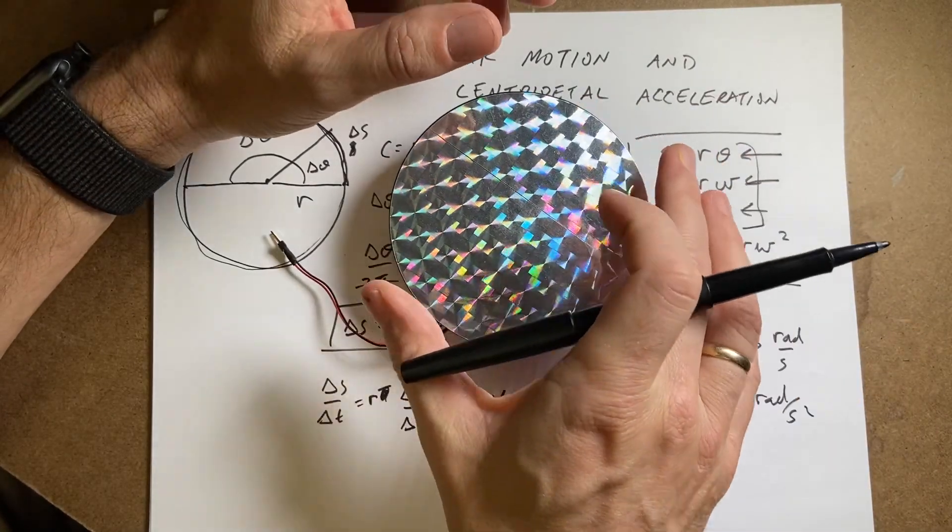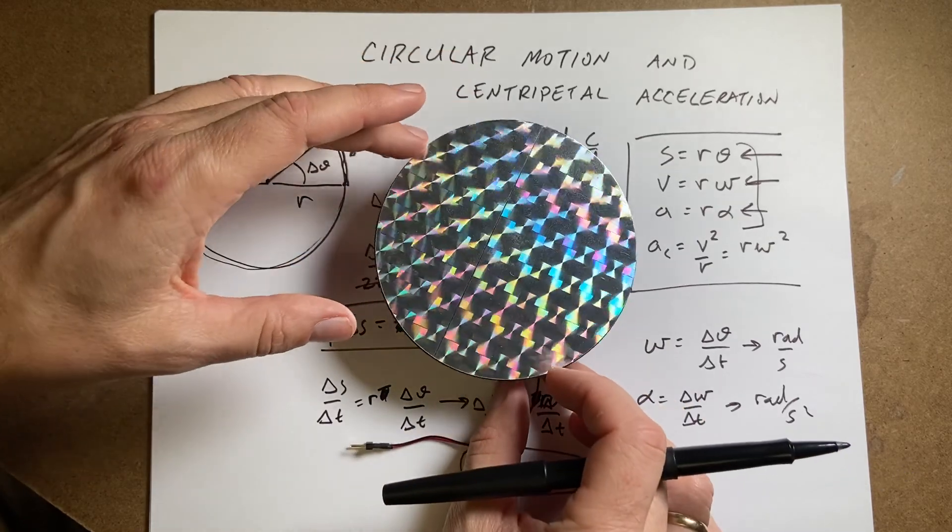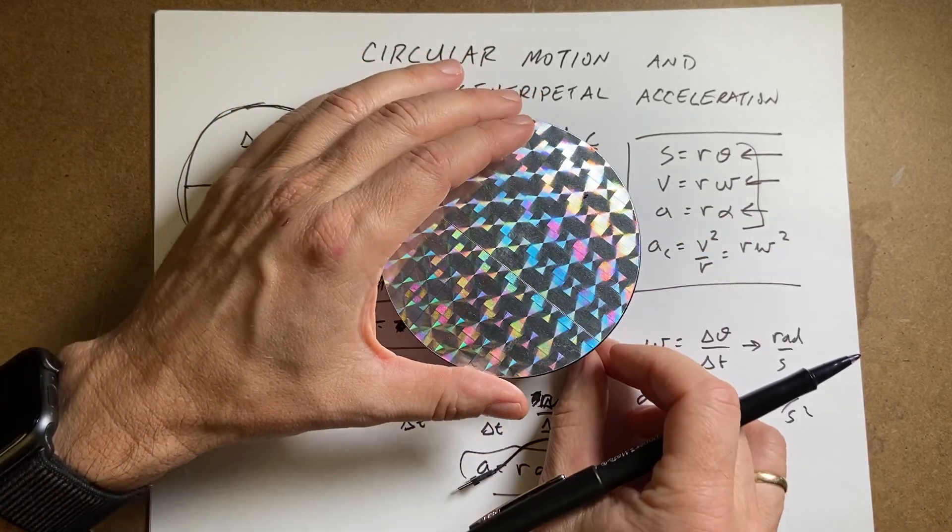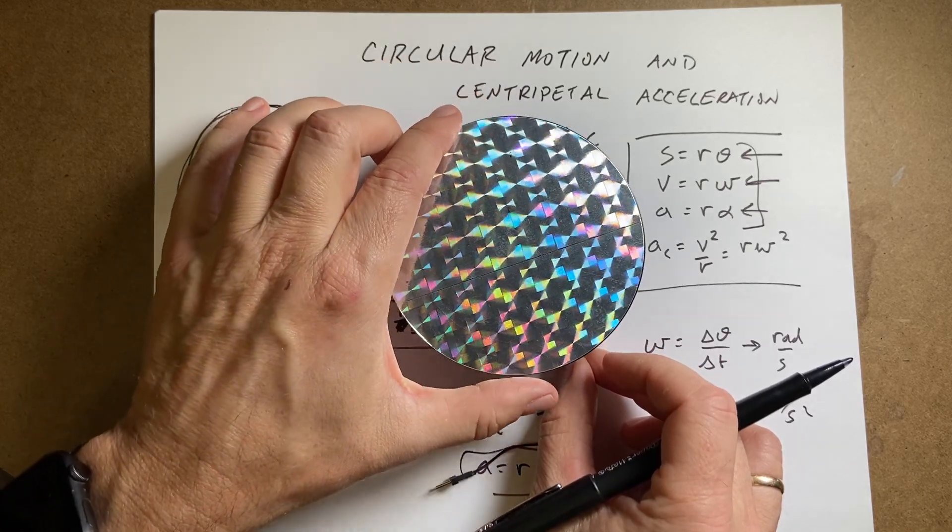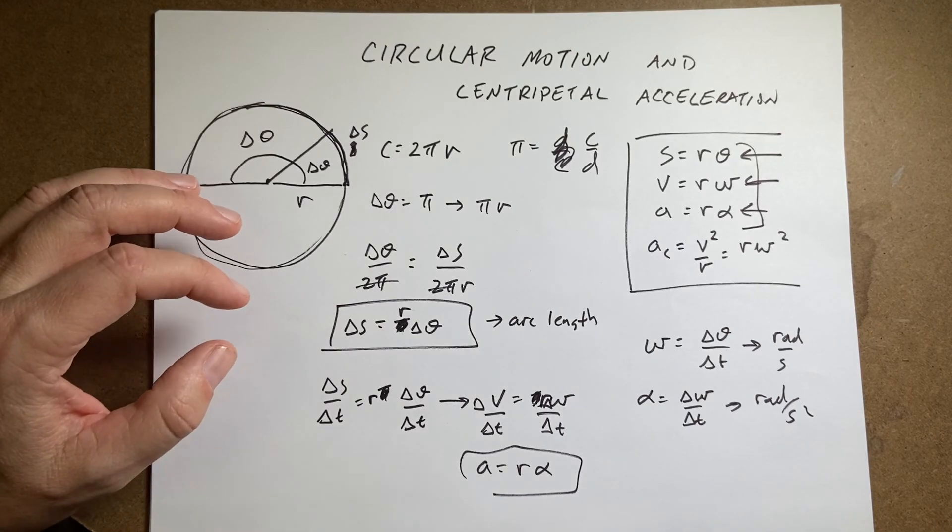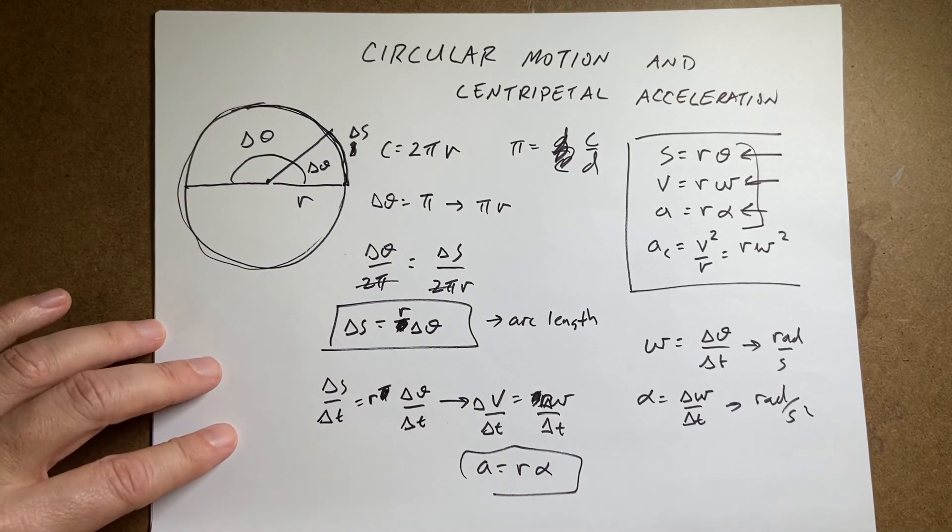Why would you ever want to do that? Well, imagine that I have this rotating disk like this. And I have two points on there. They're definitely moving at different velocities, but they have the same angular velocity. So it can be useful sometimes to switch over in terms of angular velocity and describe the problem in terms of angular velocity.